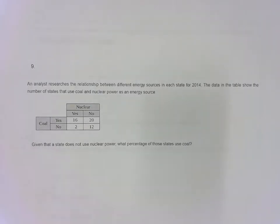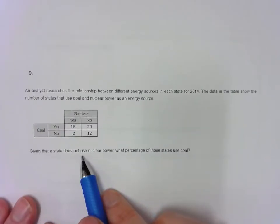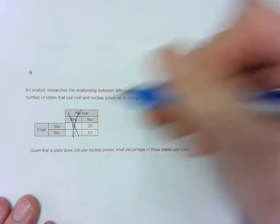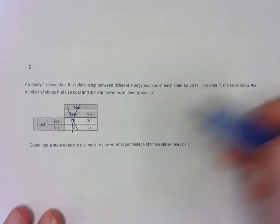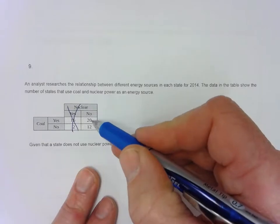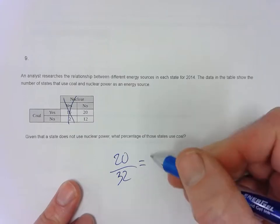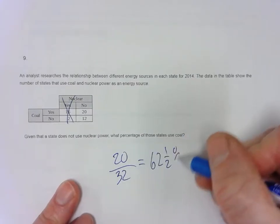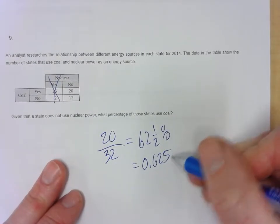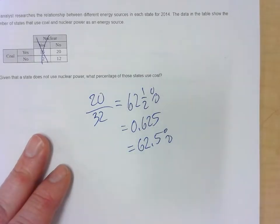Question 9: This is a conditional probability problem. Given that the states do not use nuclear power, we eliminate those states. Of the remaining states, the ones that don't use nuclear power but do use coal is 20. So it's 20 out of the total 32 non-nuclear states, which is 0.625 or 62.5%.